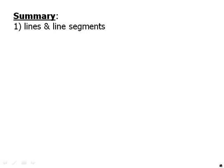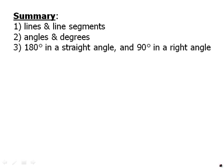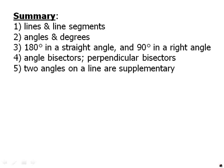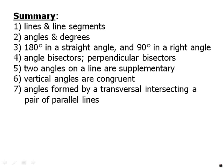In summary, we talked about lines and line segments. We talked about angles and degrees. We pointed out that there are 180 degrees in a straight angle and 90 degrees in a right angle. We talked about angle bisectors and perpendicular bisectors. An angle bisector divides an angle into two smaller equal angles. A perpendicular bisector is perpendicular to a segment and divides it into two equal halves. We talked about how two angles on a line are supplementary. Vertical angles are congruent. And we talked about the angles formed by a transversal intersecting a pair of parallel lines. And we will talk about many applications of these fundamental ideas in the upcoming videos.